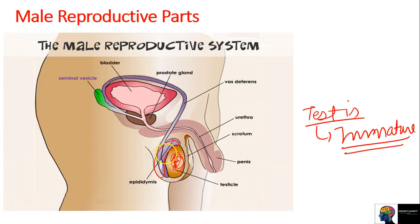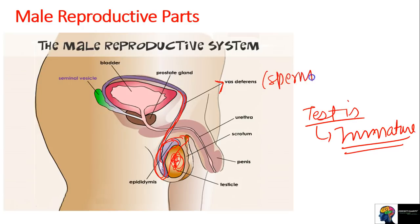So the development - you can understand it this way: sperms go from immature to mature in the epididymis. Then from here, a tube continues called the vas deferens - in many books it is also written as sperm duct. This tube goes from the epididymis further up.